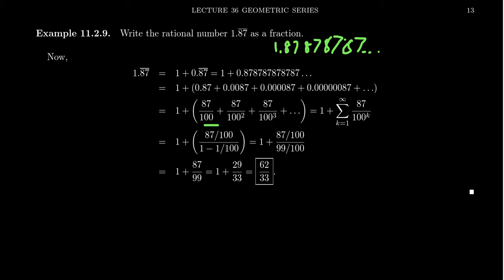So we get 1 plus 87 over powers of 100, which can be written as a series: 1 plus the sum, where k ranges from 1 to infinity, of 87 over 100 to the k.